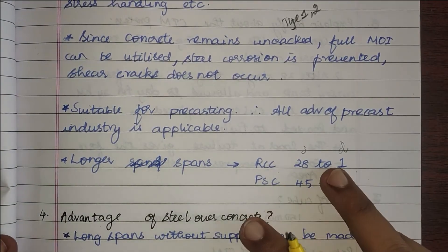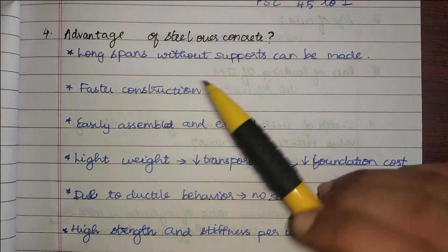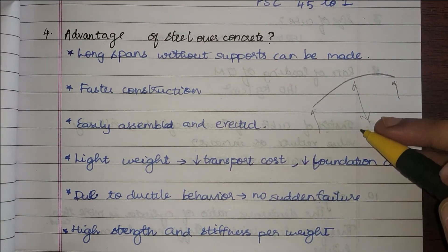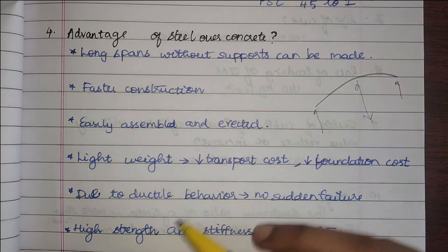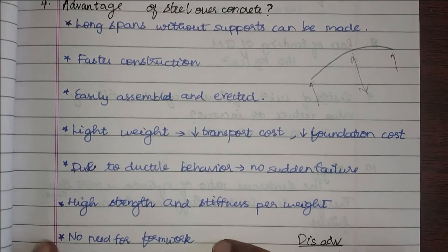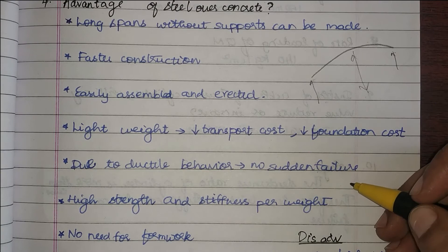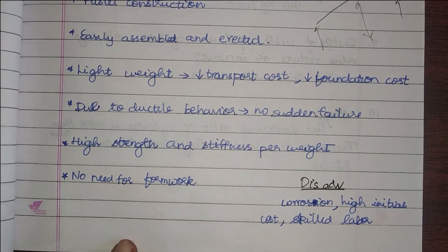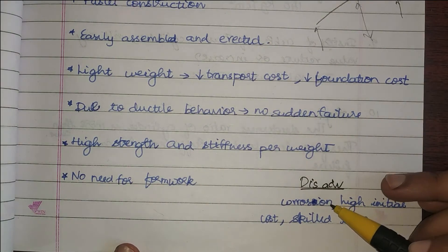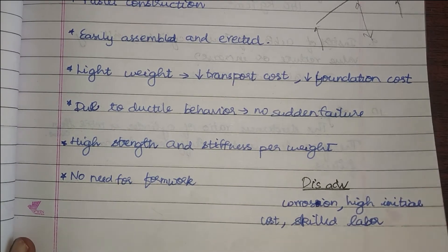The next question is the advantages of steel over concrete. Steel allows longer spans without intermediate supports, which is one of the main reasons it is used in industrial buildings. Other advantages include faster construction, easy assembly and erection (provided sufficient space is available), lower transport and foundation costs due to its lightweight nature, and ductile behavior that prevents sudden failure by giving warnings through yielding. Steel also offers high strength and stiffness per unit weight and no need for formwork. Disadvantages include high risk of corrosion, high initial cost, and the need for skilled labor.